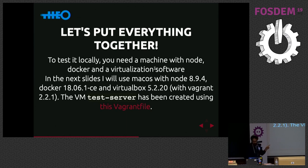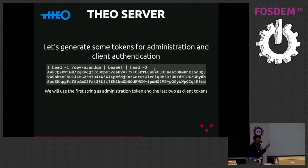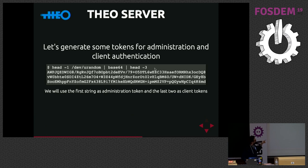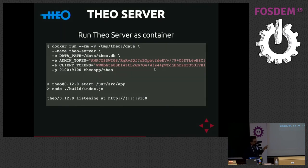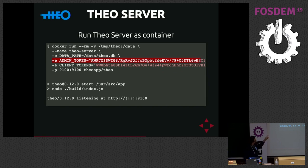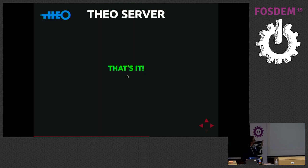These slides will help you go through the demo. The first thing we do is generate some tokens we will use for administration — used by Theo CLI — and for Theo agent. We will use the first one for Theo CLI and the other two for Theo agent. We just run Theo server as a Docker image, passing a local directory as a volume, the admin token, and the client token, specifying which port we want to expose, and run it.